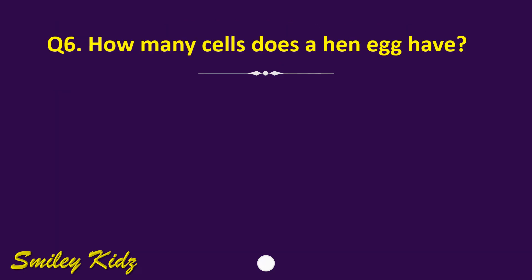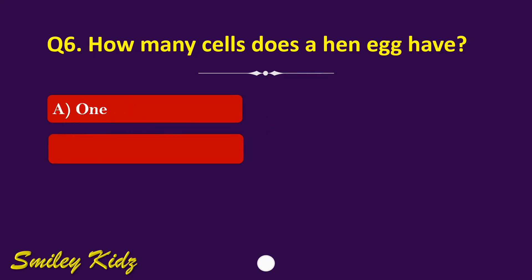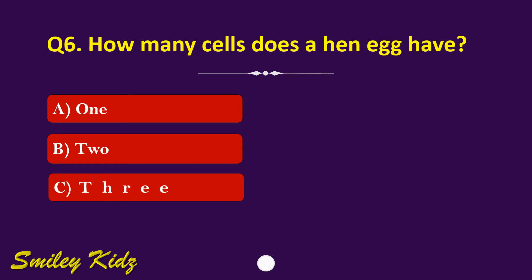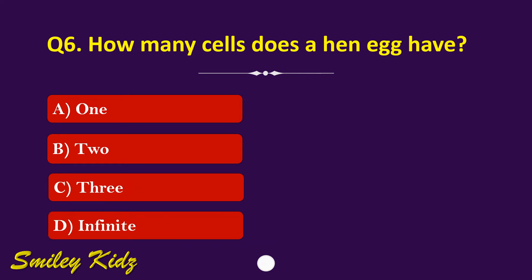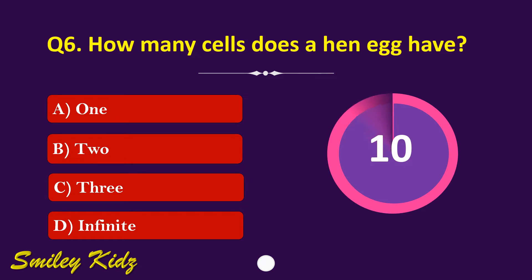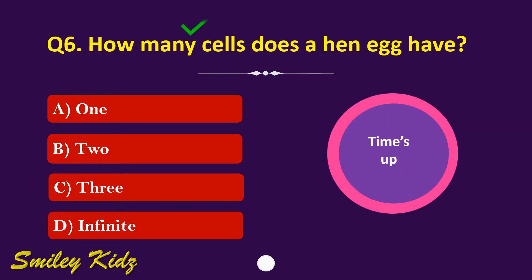Question number 6. How many cells does a hen egg have? The options are: A. 1, B. 2, C. 3, or D. Infinite. Your time starts now. Your time is up and the right answer is option A. 1. A hen egg has one cell.